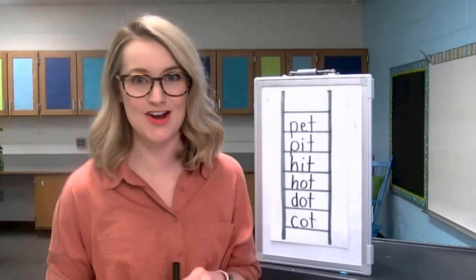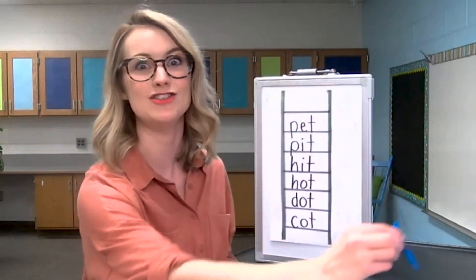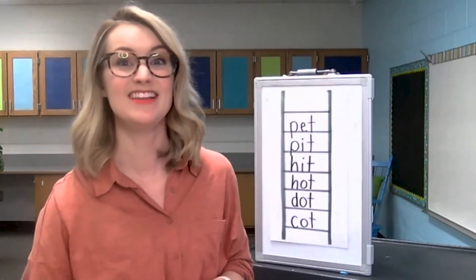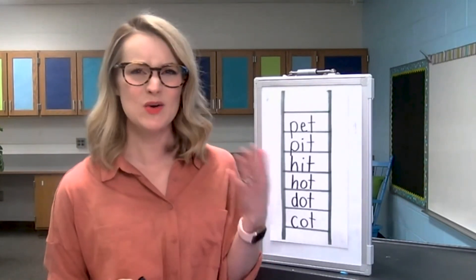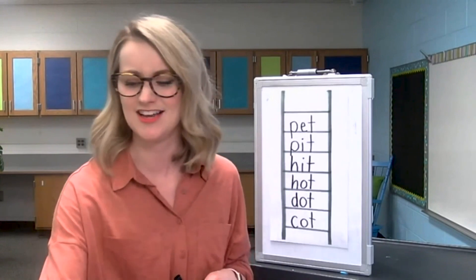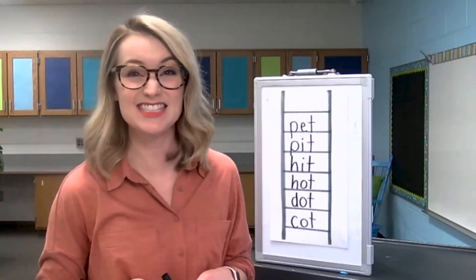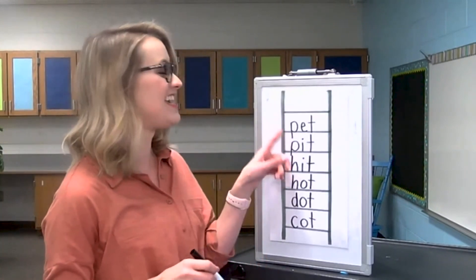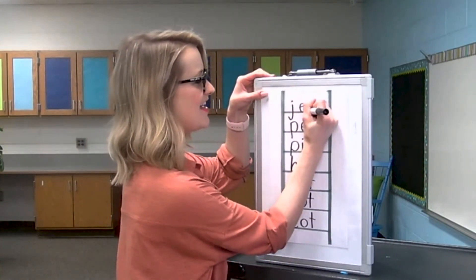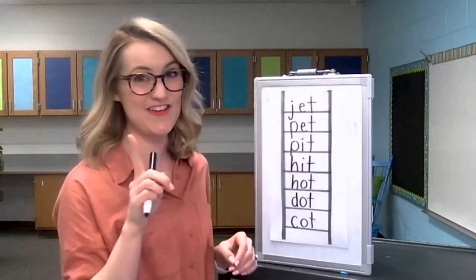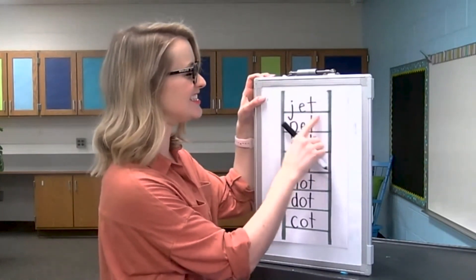Now we've got just one more word to get to the very top of our ladder. We're going to change one letter in the word pet to make the word jet. This is a jet — it flies so fast. Jet. Let's listen for the sounds: J-E-T. Jet. What letter do you think we're going to change to turn pet into jet? Yes, the beginning sound. We're going to take out the P and add in a J. Let's write it down: J-E-T. Take your finger and let's check it: J-E-T. Jet. Great work.